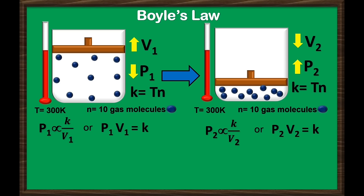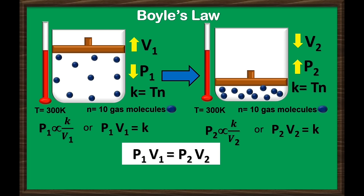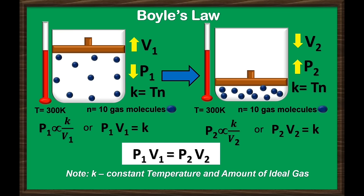The product of final pressure and final volume is also equal to K constant — the constant value of temperature and fixed amount of gas. Since both products equal K constant, we can express Boyle's Law as P1 × V1 = P2 × V2. Always remember that the Boyle's Law equation can be used only if the temperature and amount of gas are constant.